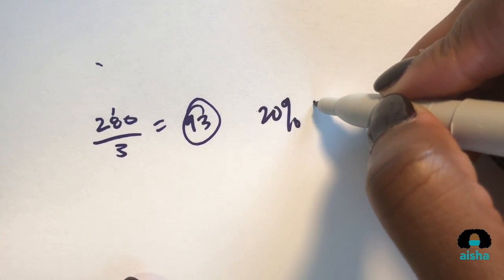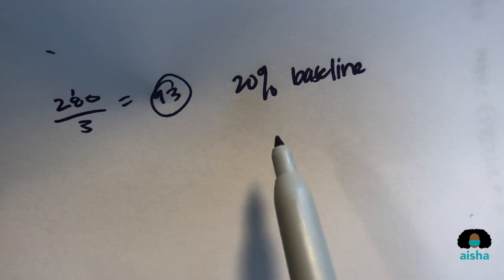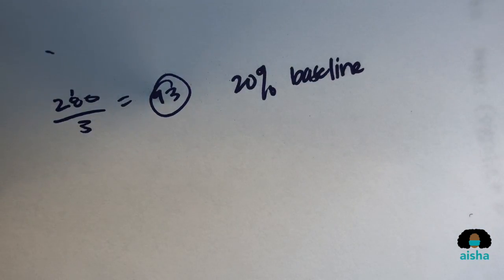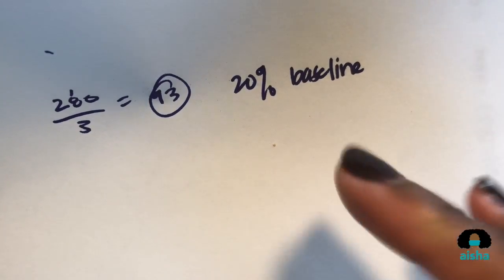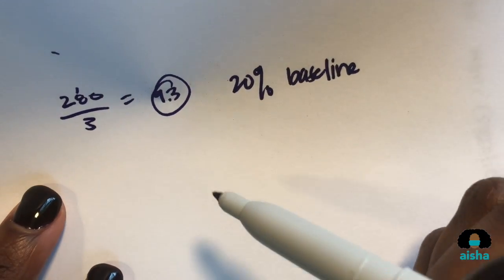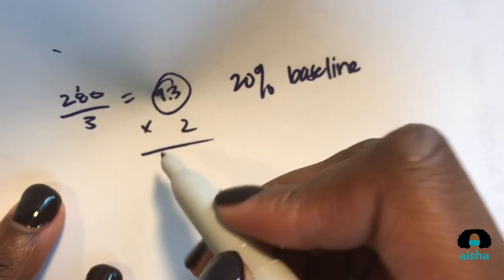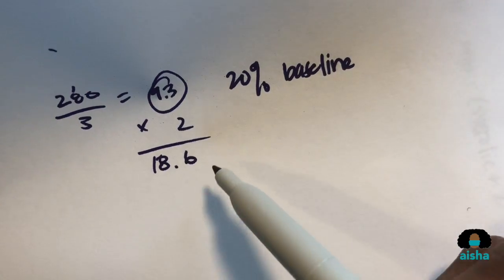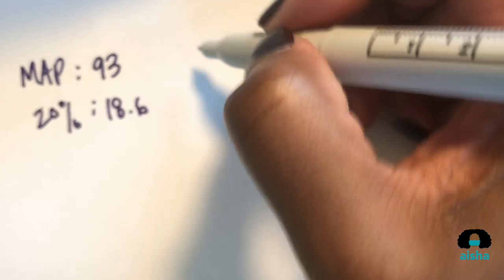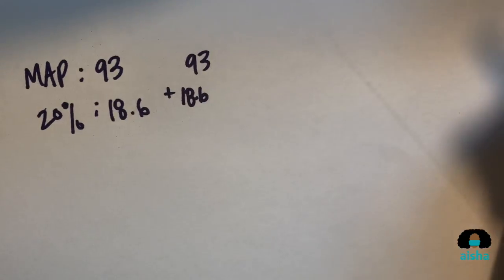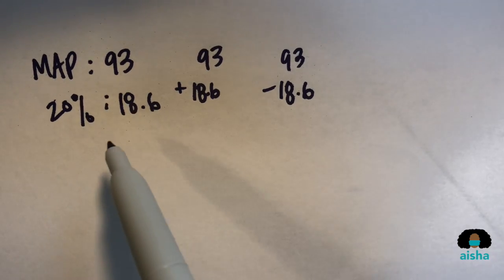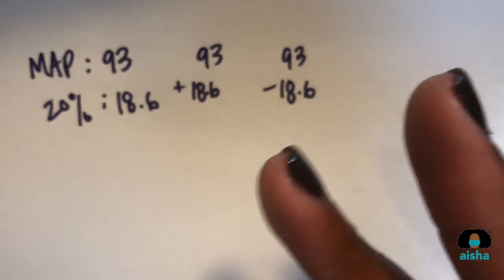Remember, we're doing 20% above and below their baseline or normal. An easy way to figure out what 20% of any number is: find 10%, which is one tenth of that number. 10% of 93 is 9.3, and since it's 20%, it's double that — so 9.3 times 2 is 18.6. Now it's 20% above and below, so you subtract 18.6 from 93 to find your lower limit, and add 18.6 to 93 to find your upper limit.